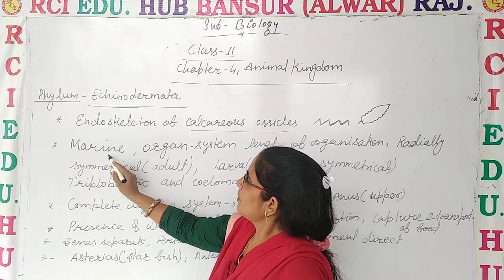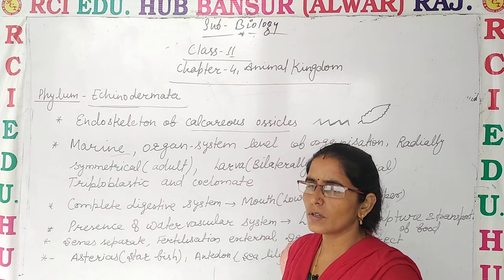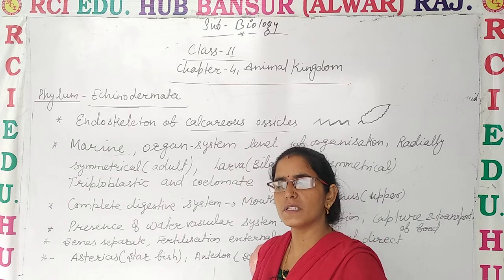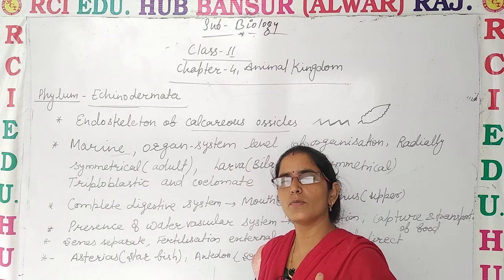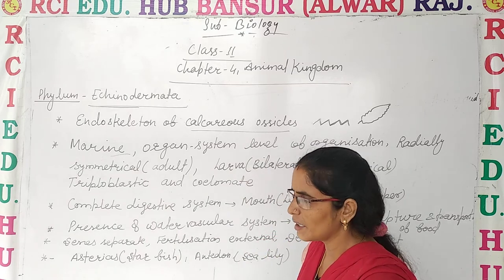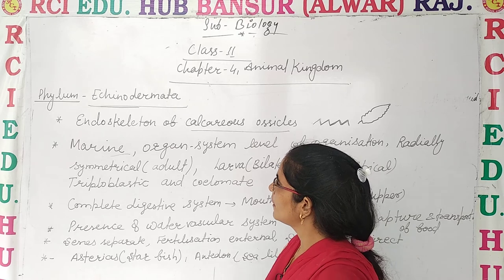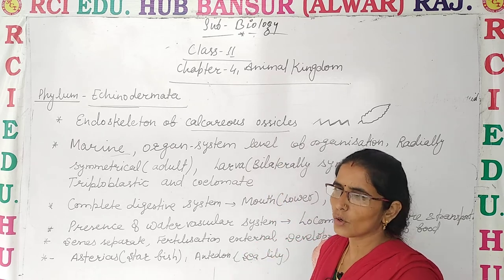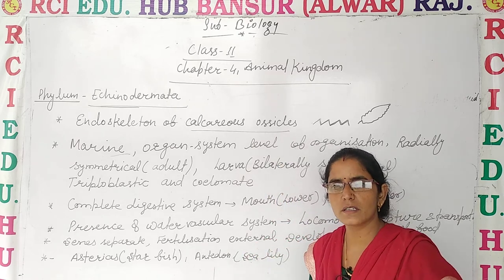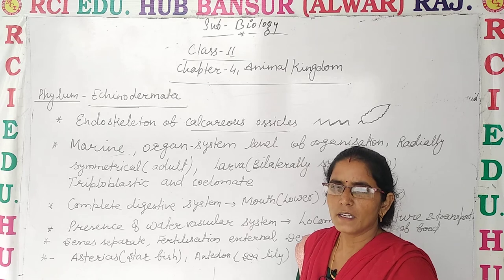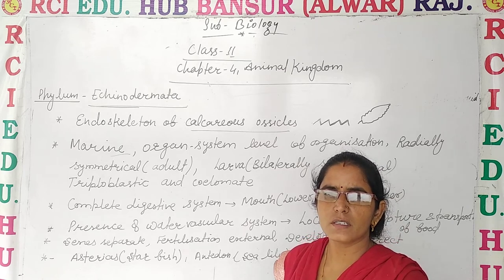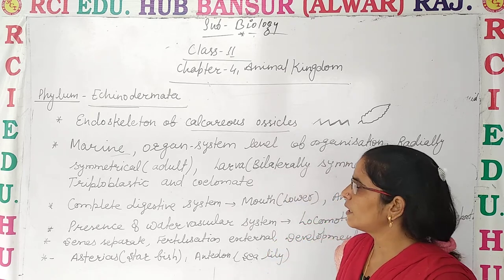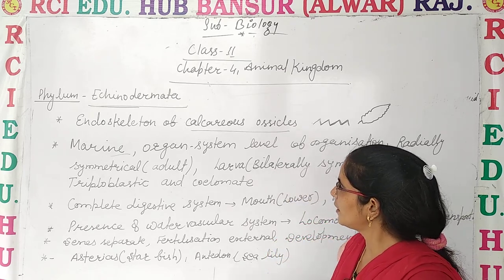Let's discuss some common and peculiar features of Echinodermata. These are marine — all organisms in Echinodermata live in a marine habitat. They have the organ system level of organization, because we have discussed that organ system level of organization starts after Platyhelminthes.